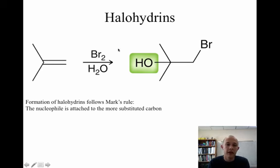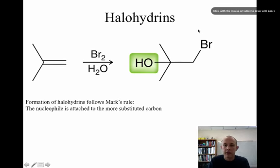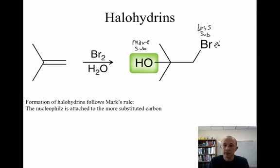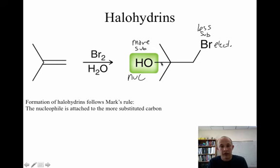If we take an alkene and treat it with bromine but use water as the solvent, we get a halohydrin. It's very important to note that bromine adds to the less substituted carbon and OH adds to the more substituted carbon. This is still Markovnikov's rule: bromine, the electrophilic atom, adds to the less substituted carbon, and oxygen — the nucleophilic atom — adds to the more substituted carbon. Let's look at the mechanism to understand why.